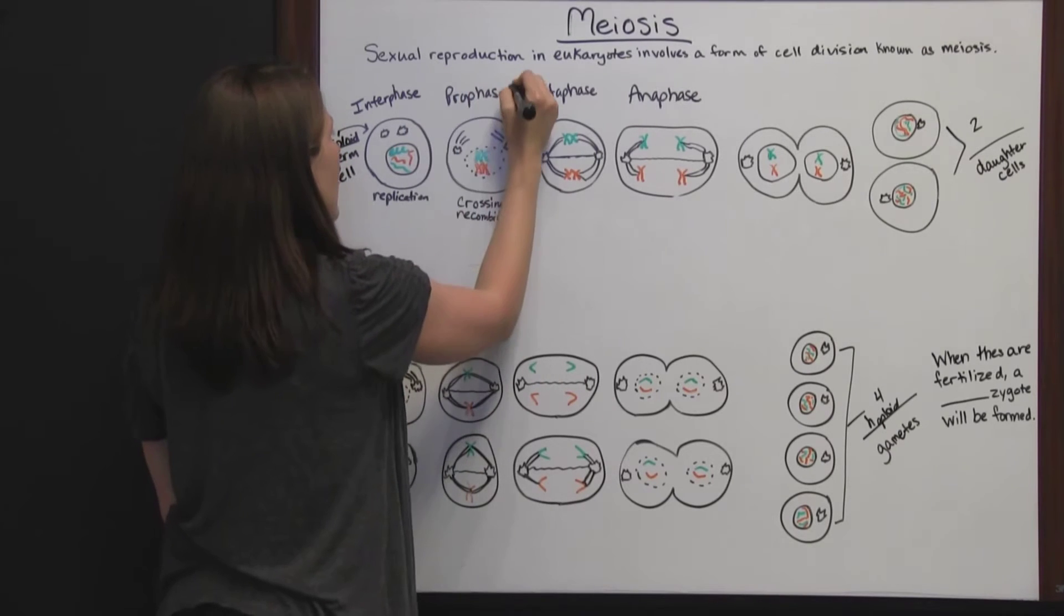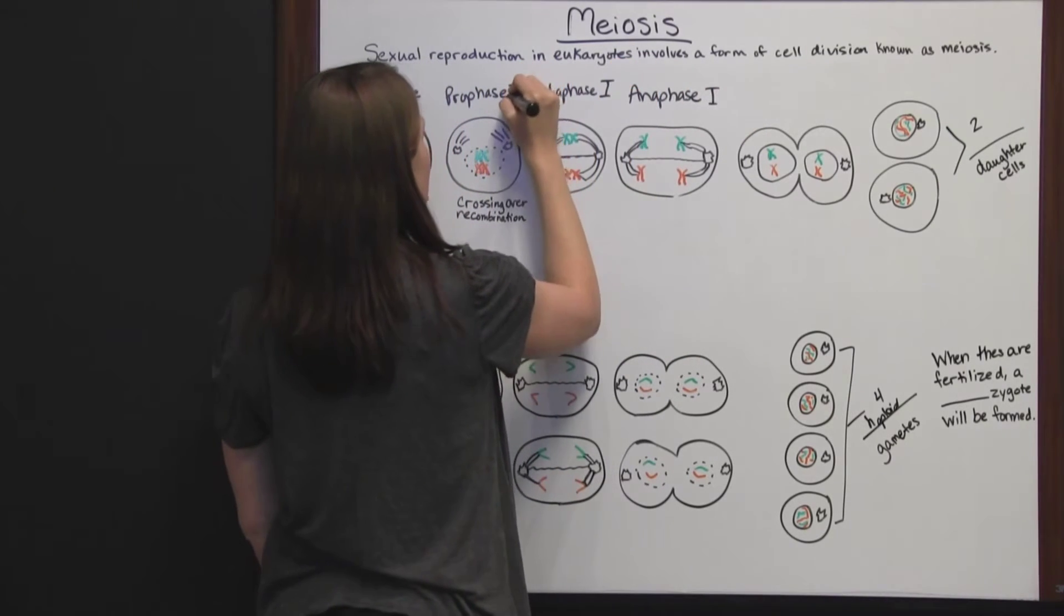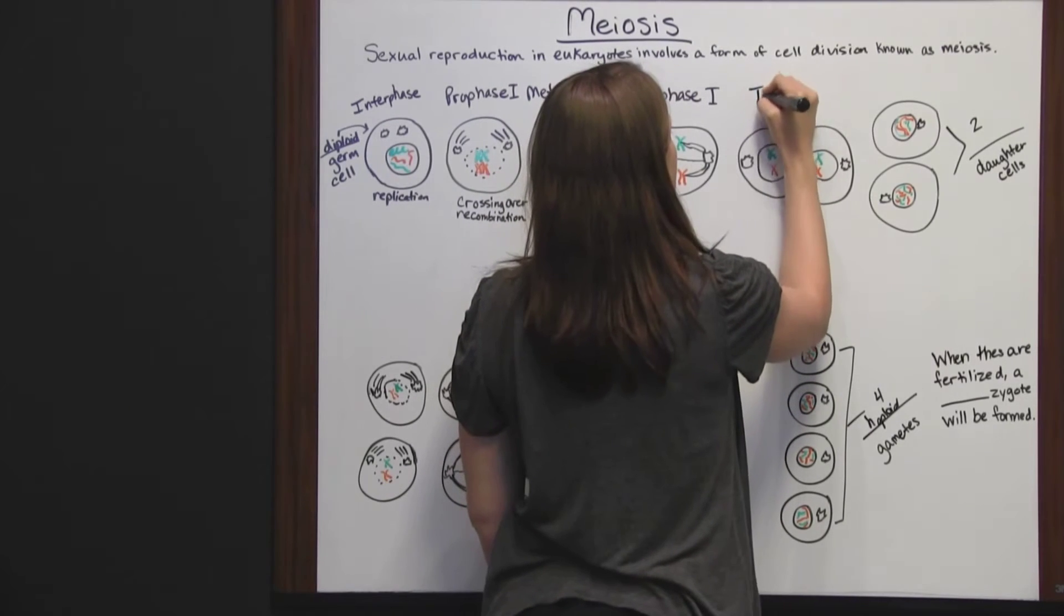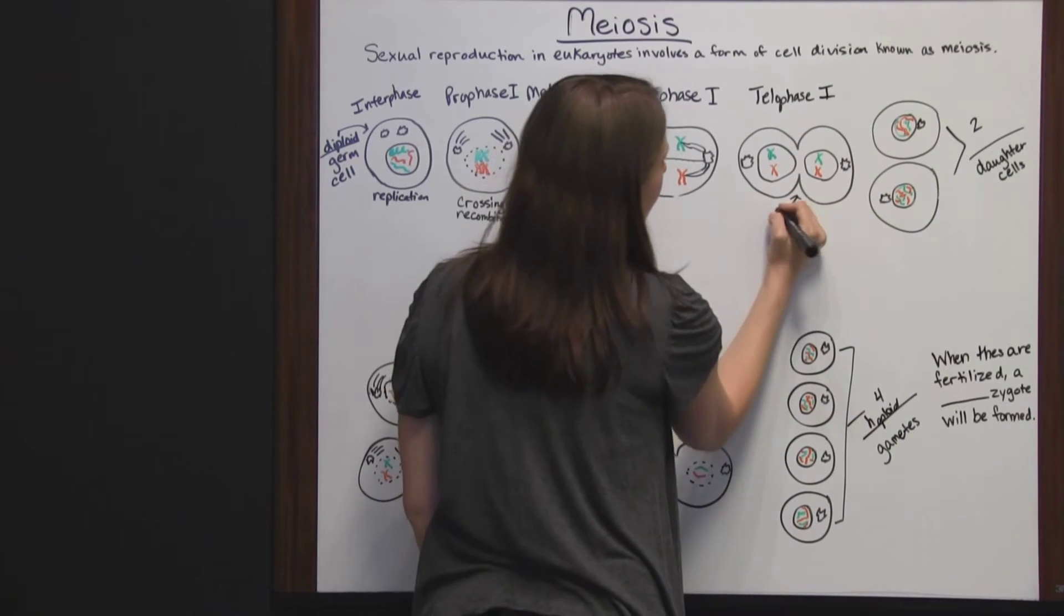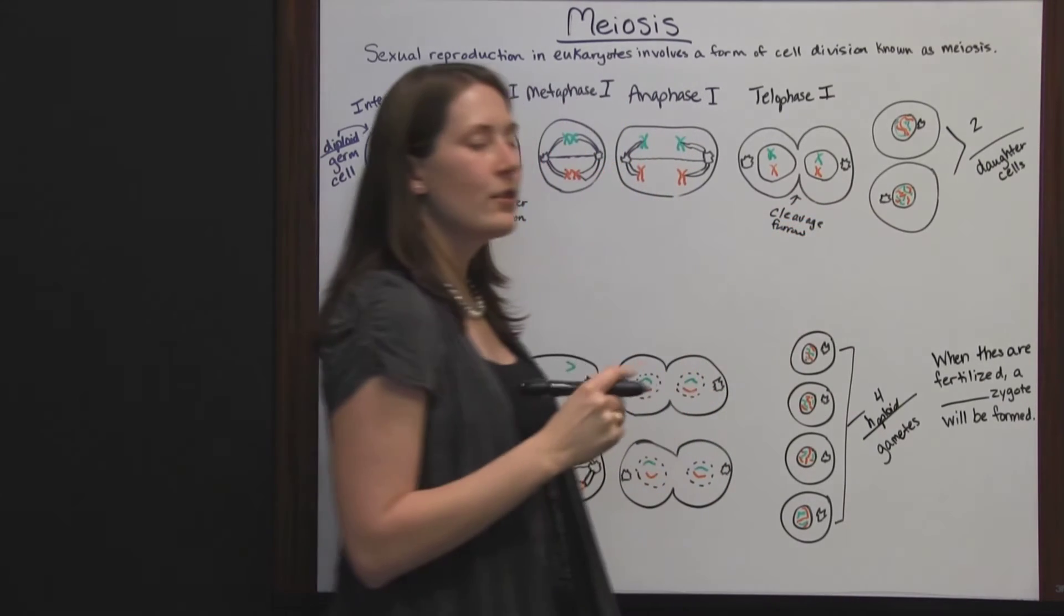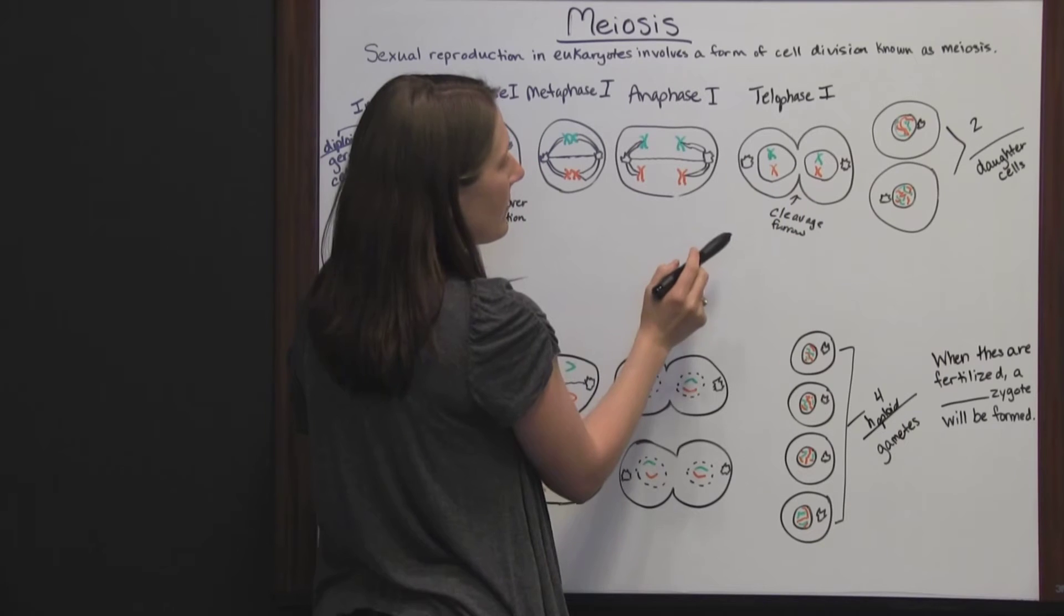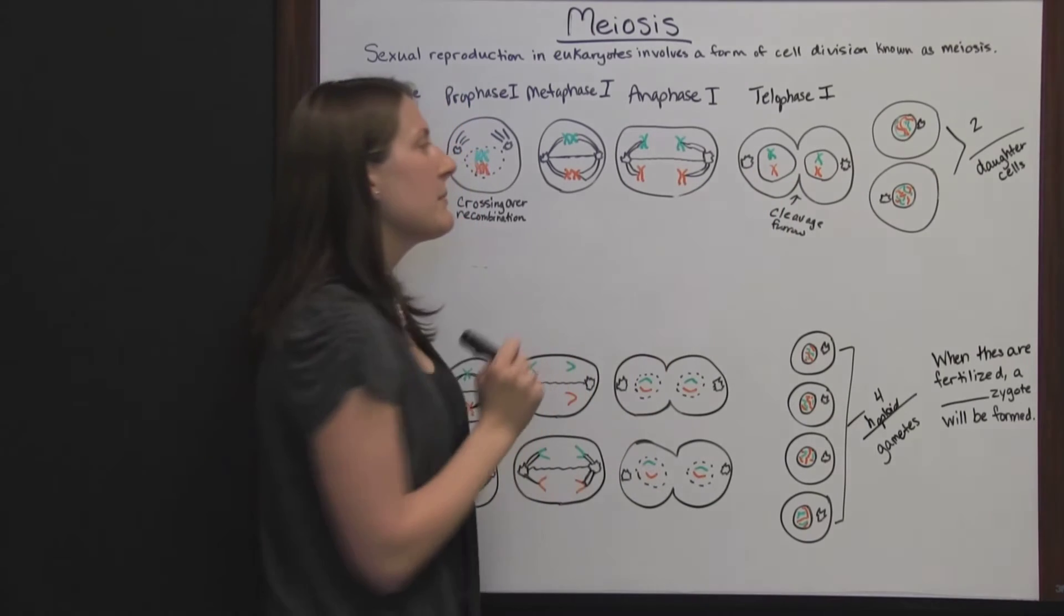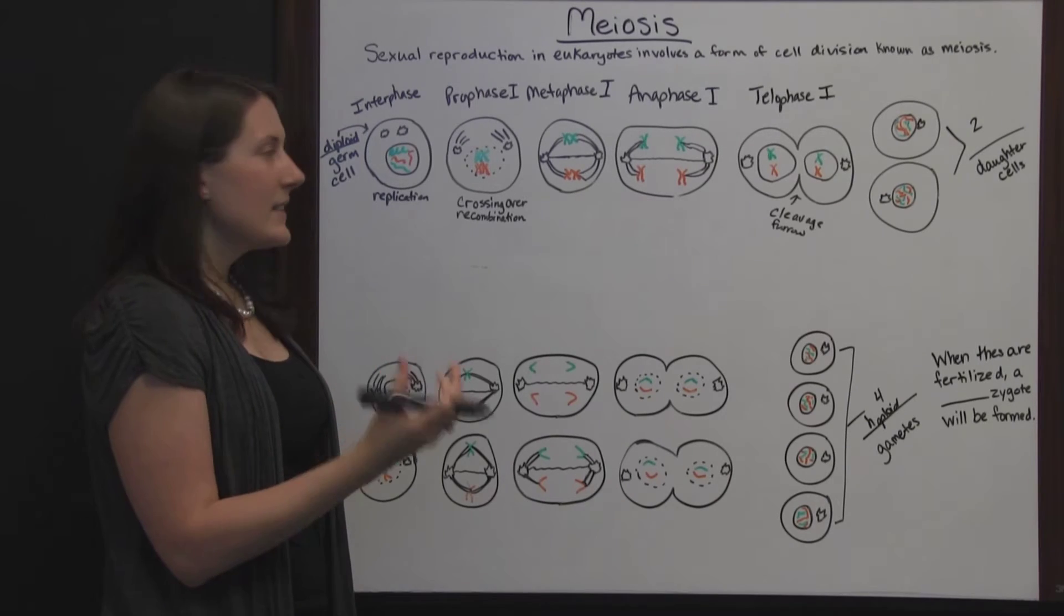These are all called prophase I, metaphase I, and anaphase I because this is a two-step process. In telophase I, the cleavage furrow prepares for the cells to separate and become two distinct cells. A nucleus is reformed, the microtubules that connected and pulled the chromosomes apart have receded, and the genetic material is encased in a nucleus again.